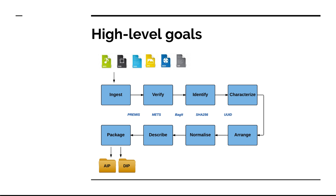Then potentially we arrange the files, although sometimes this happens prior to ingest. If we want our files to have consistent, standard, open formats, we may want to normalize the files. Then we can add descriptive metadata and finally package the files and store them as AIPs and DIPs. AIPs are for preservation assets and DIPs are the access copies. That lingo also comes from the OAIS framework — it means archival information package and dissemination information package, but you can think of them as preservation and access.